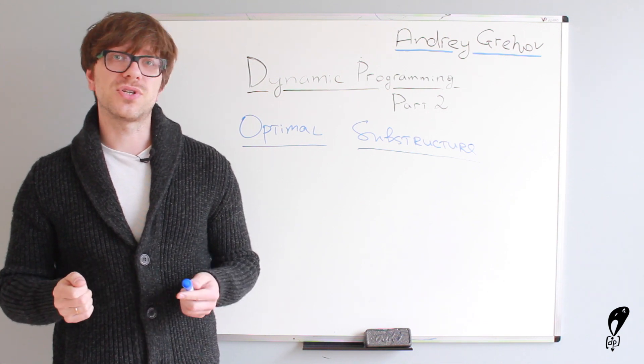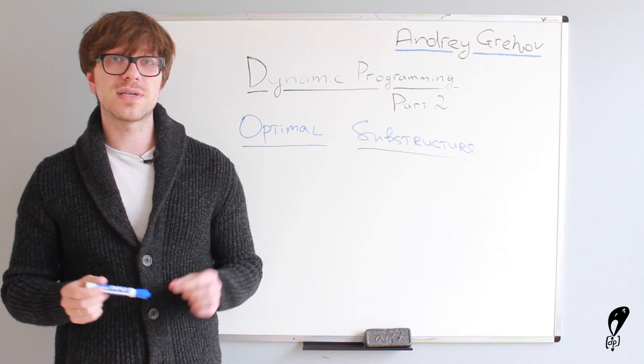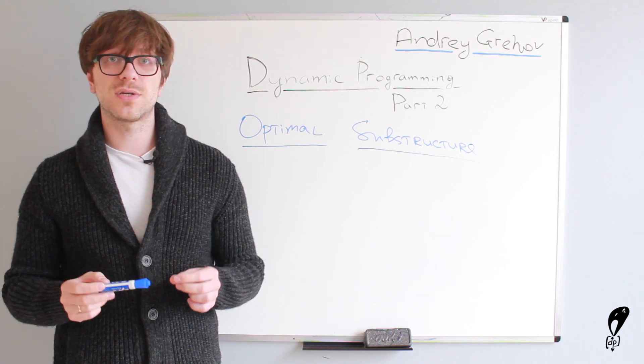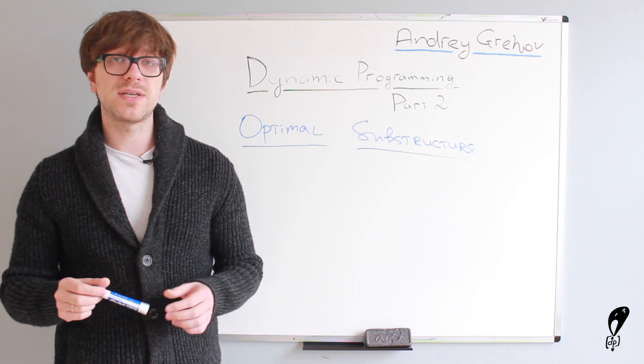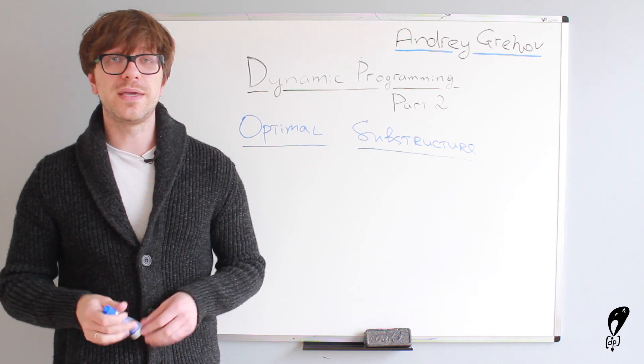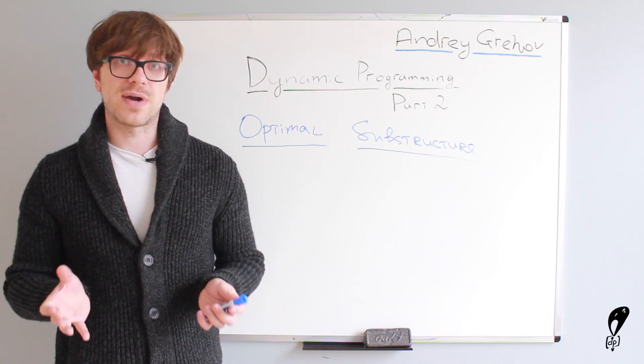A textbook definition says a problem has optimal substructure property when its optimal solution can be constructed from the optimal solutions of its sub-problems. So, by solving each sub-problem in its most optimal way, we obtain optimal solution to the original problem.